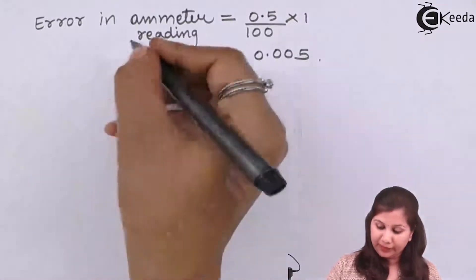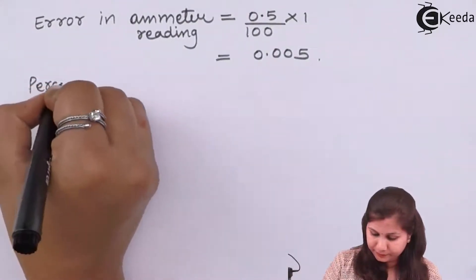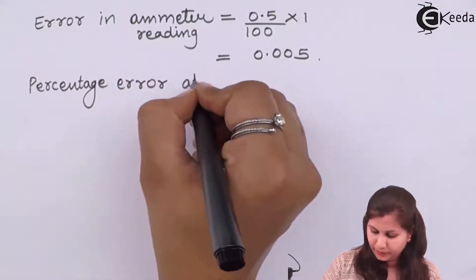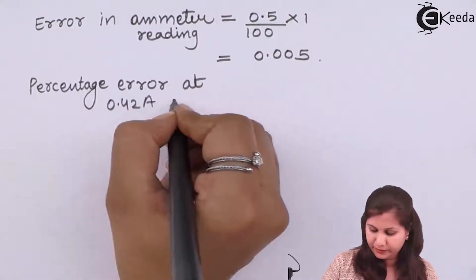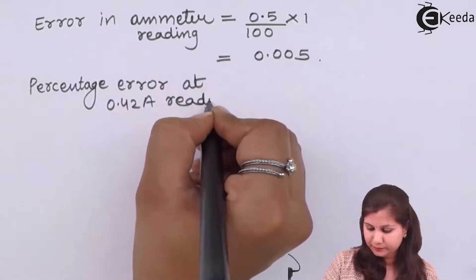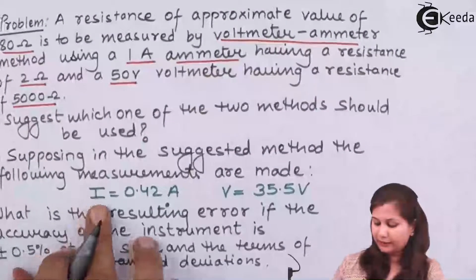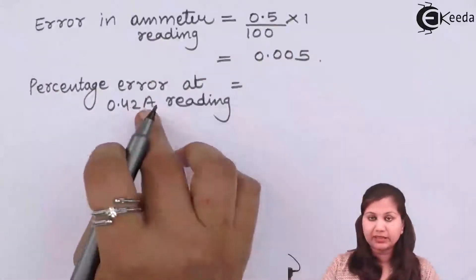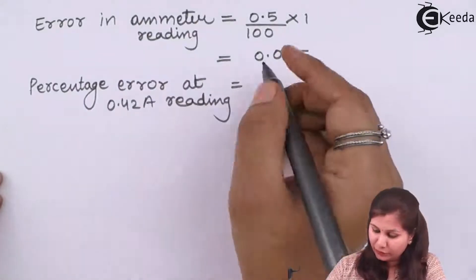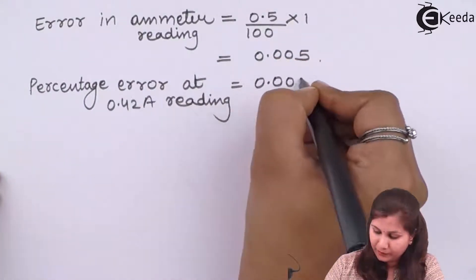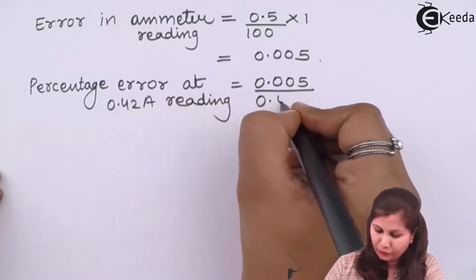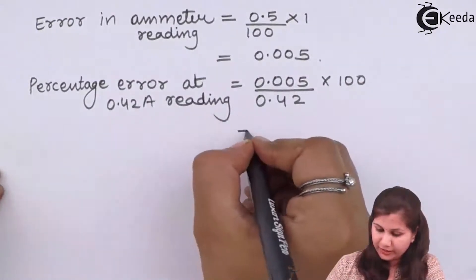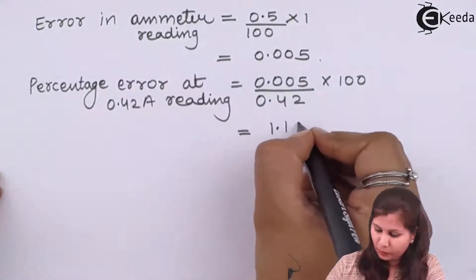Now if we calculate the percentage error at the 0.42 ampere reading, because the meter is giving us a reading of 0.42 amperes, the percentage error is 0.005 divided by 0.42 into 100, which comes out to be 1.19 percent.